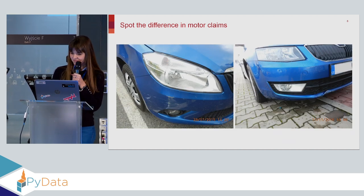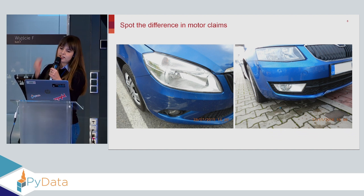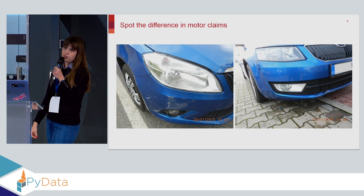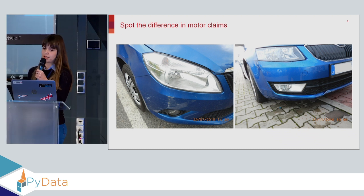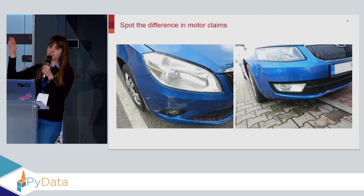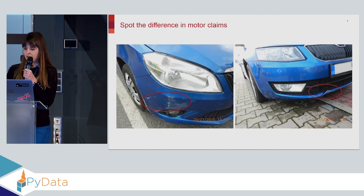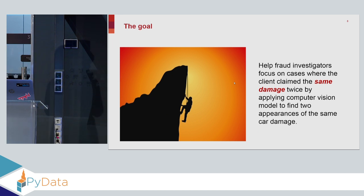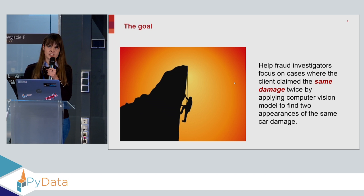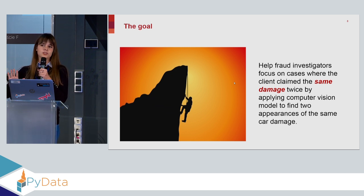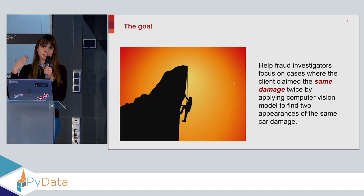Damage is different in that same example. Here I would say it's easier for the human eye to see that it's different, but still for the computer when we calculate features and similarity, these two are quite similar. We don't want to send our fraud investigators such pictures because they want to see the same damage. So our goal is to help fraud investigators focus on cases where the client claims for the same damage twice — a system where they input an image of the damage and get a ranking with the most similar pictures from history that have the same damage.